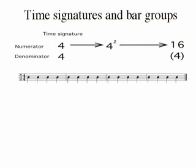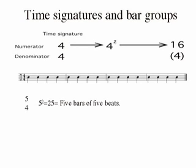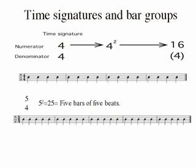If a bar of four beats usually participates as one of a four-bar group, making a 16-beat cycle in all, then other meters should follow the same principle. A bar of five beats should be part of a five-bar bar group, making 25 beats in all, and so fulfilling the tendency of the square.